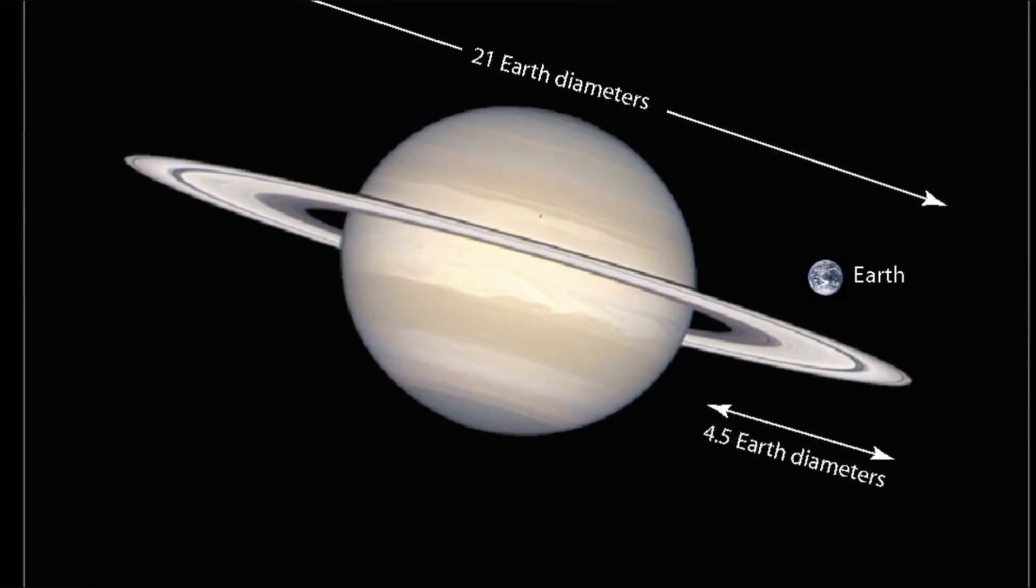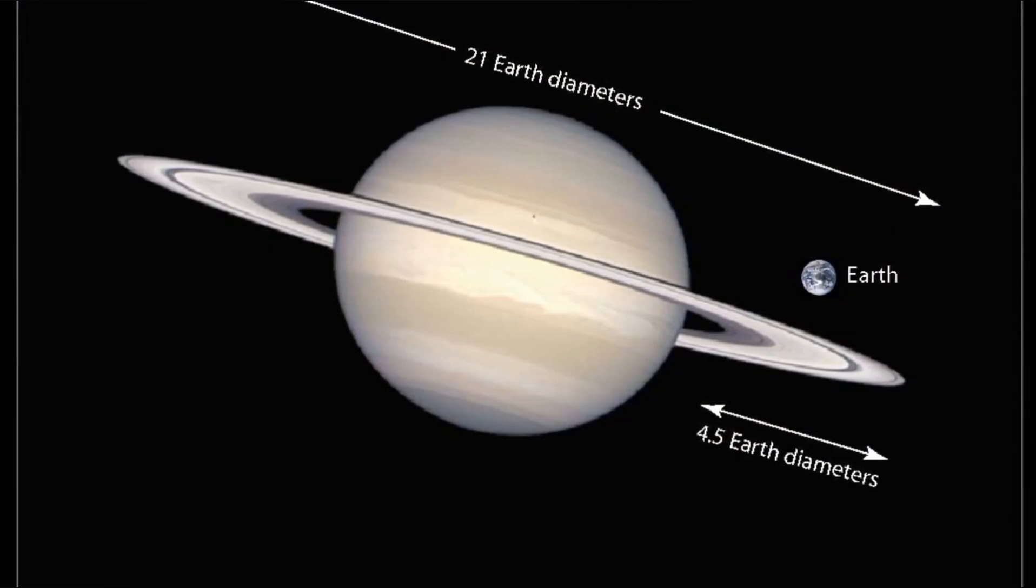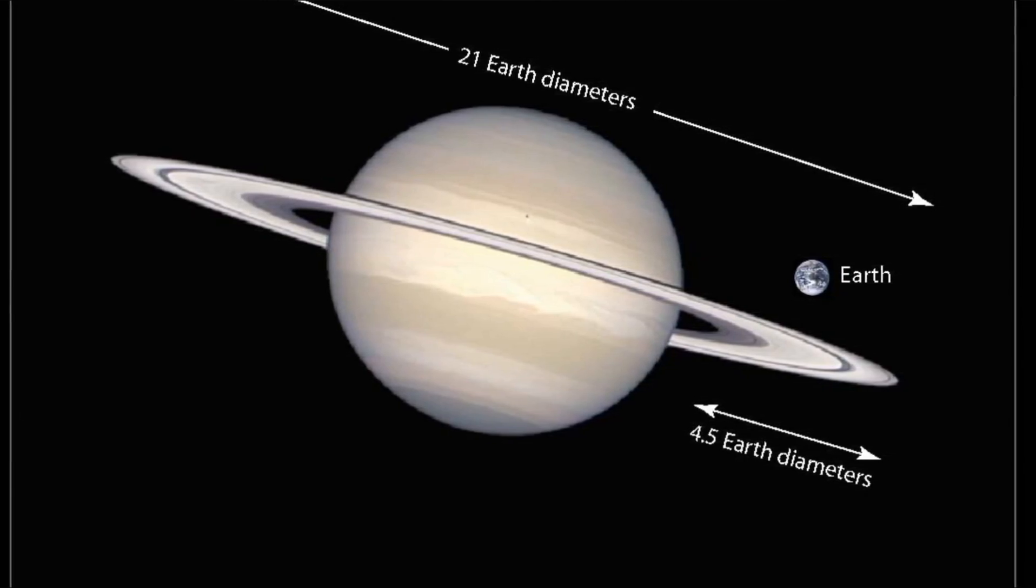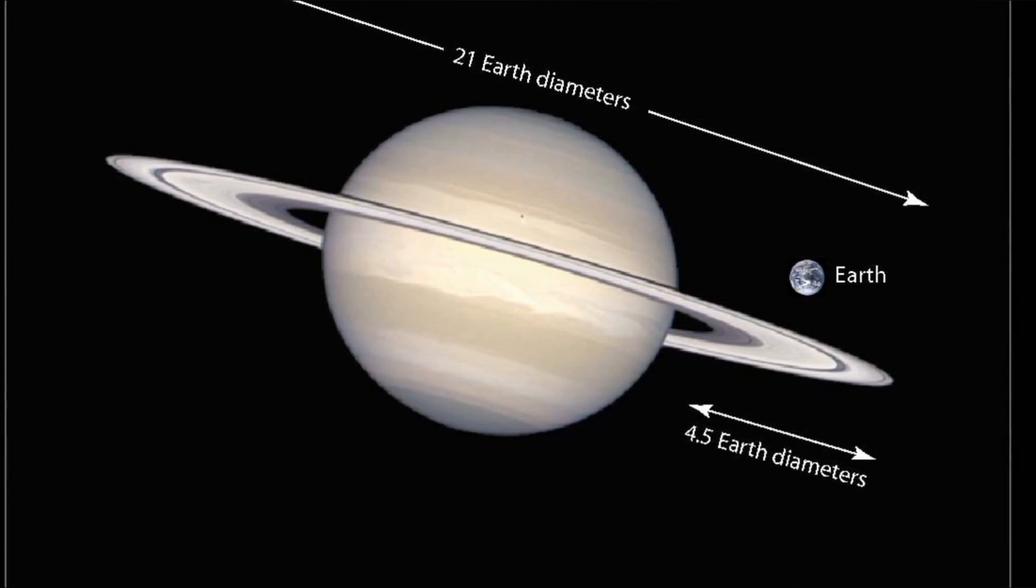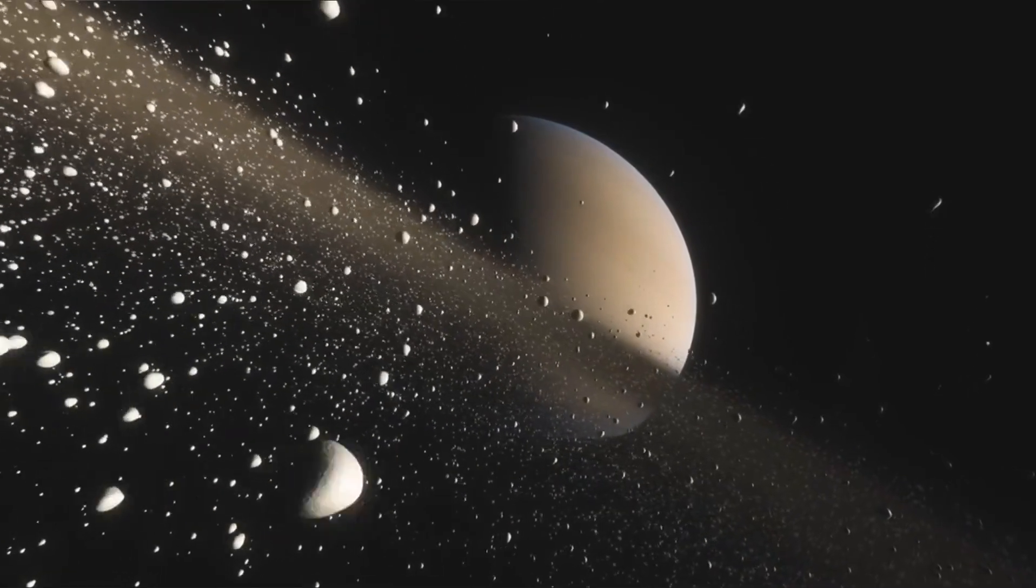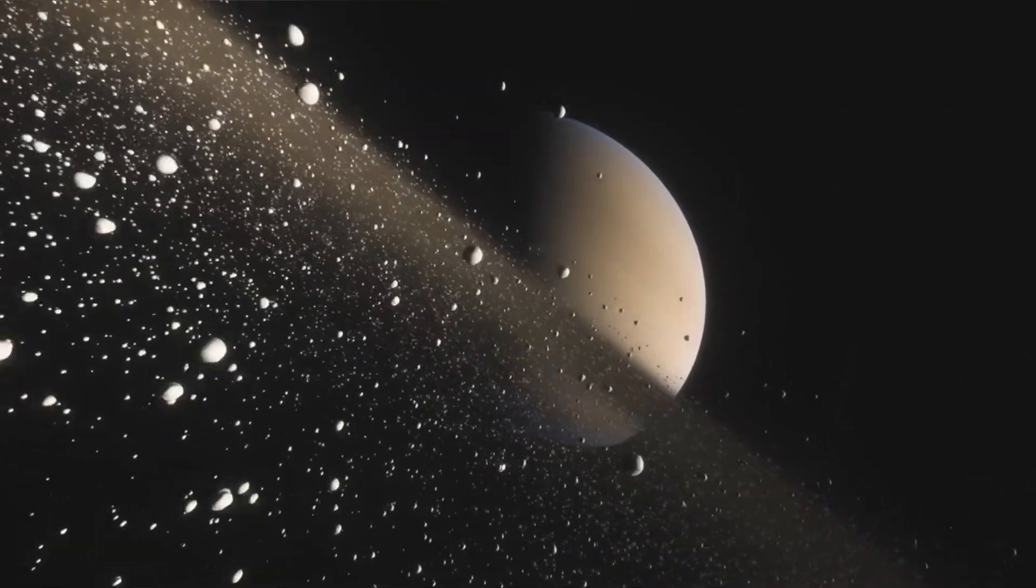The planet's equatorial diameter measures about 75,000 miles, while its polar diameter is approximately 68,000 miles, making it significantly flattened when compared to the more spherical shape of Earth. This flattening is caused by Saturn's rapid rotation, which has a profound impact on the planet's atmosphere, magnetic field, and weather patterns.